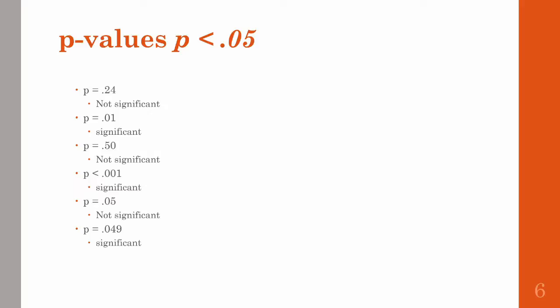0.05 is definitely an arbitrary number, and there are a lot of criticisms about p-values, but that's for a more advanced statistics class. For now, just get used to interpreting p-values in this way as our main inference tool.